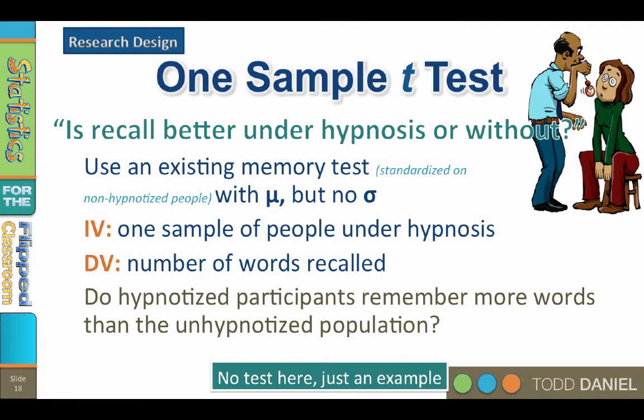By comparing the average number of words recalled from our hypnotized sample to the population value of unhypnotized test takers, we could answer whether hypnotized participants remember more words. When using SPSS to conduct a one-sample t-test, you need one categorical dichotomous independent variable and one continuous or scale dependent variable. The categorical independent variable creates two groups, and the dependent variable is measured and compared between the groups.